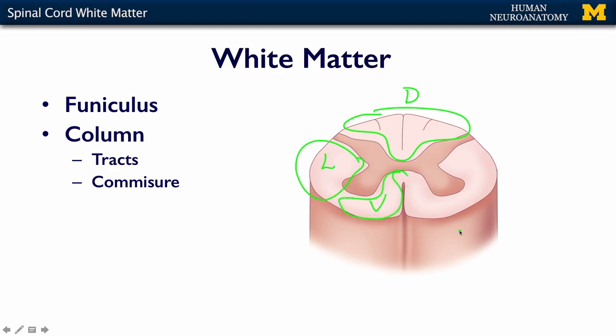We'll talk a little bit more about some specifics as we go along. The dorsal funiculus is divided into two columns: a right and a left column.